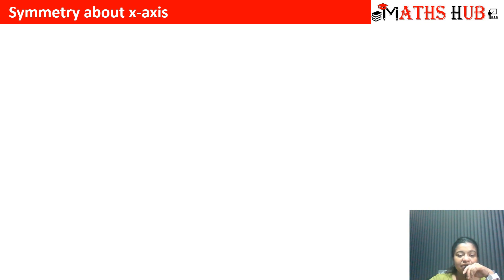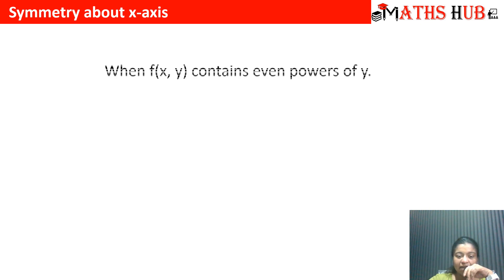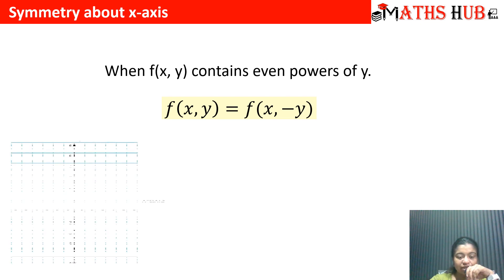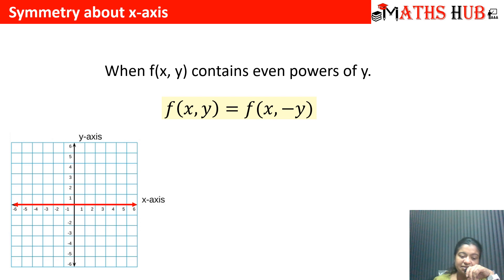Let us talk about symmetry about the x-axis. A curve is symmetrical about the x-axis when it always contains even powers of y. Mathematically, to check whether a function is symmetrical about the x-axis, we simply replace y with minus y. If the function remains unchanged, the function is symmetrical about the x-axis. Graphically, the x-axis acts as the mirror — whatever image is above the x-axis, the same replica appears below it.